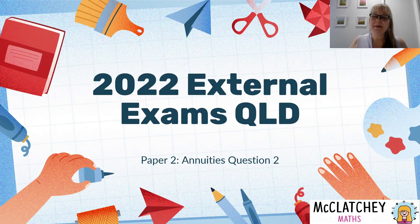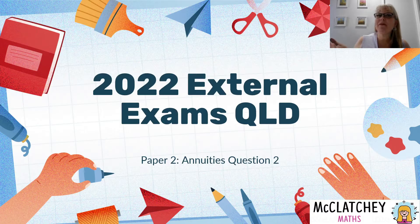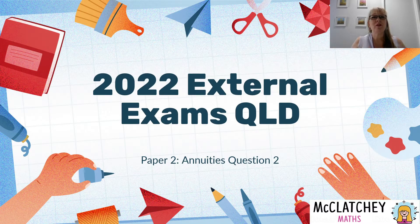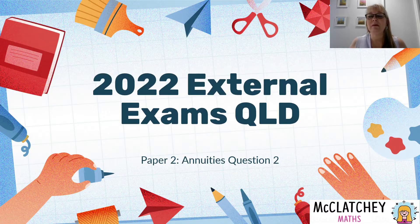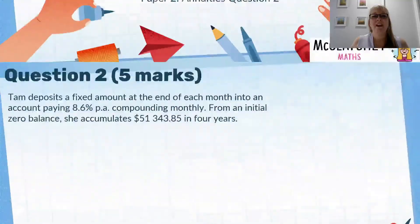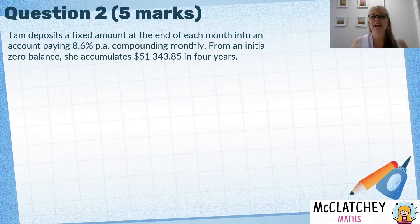Hi, welcome back to McClutchy Maths. My name is Natalie McClutchy and today we are looking at 2022's external exam paper for Queensland, Australia. We are moving on to our complex familiar and complex unfamiliar questions from paper two, which are worth several marks — so these are the ones we really want to do well on. And we're looking at question two, which is an annuities question.